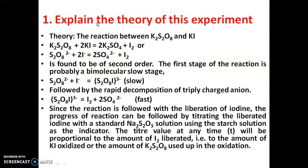The first question: explain the theory of this experiment. The reaction between K₂S₂O₈ (potassium persulfate) and KI (potassium iodide) is: K₂S₂O₈ + 2KI → 2K₂SO₄ + I₂, or in ionic form: S₂O₈²⁻ + 2I⁻ → 2SO₄²⁻ + I₂. It is found to be a second order reaction in chemical kinetics.